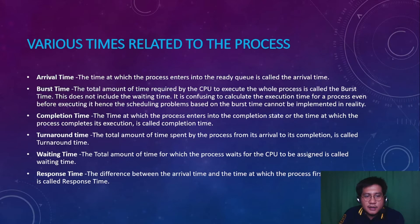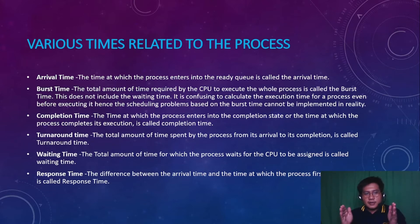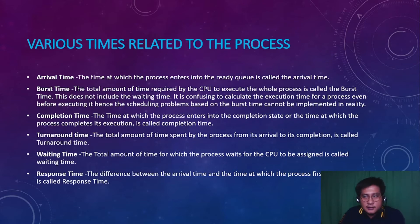The turnaround time is the total amount of time spent by the process from its arrival to its completion. So if this is the arrival time, this is the supposed burst time, and this is the actual completion time — we count those to get the total turnaround time. Waiting time talks about the time spent by the process waiting before it is given an allocation in the CPU to be executed.